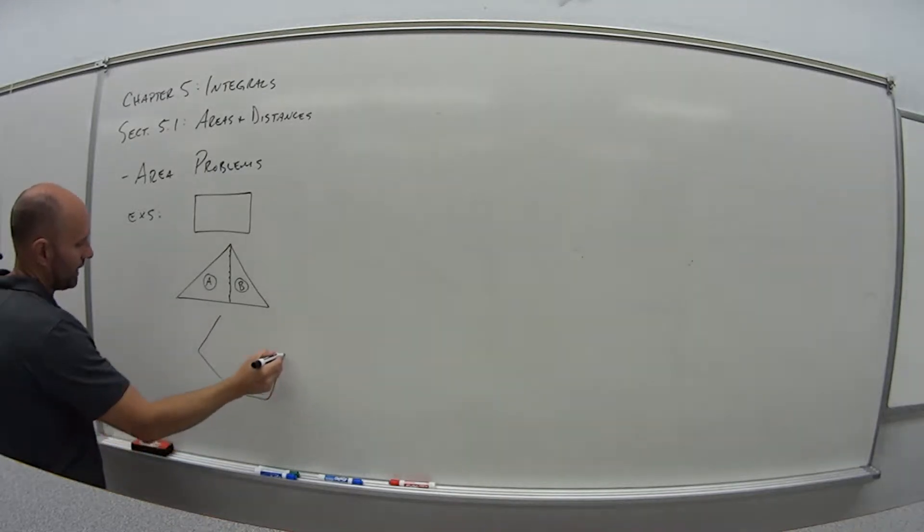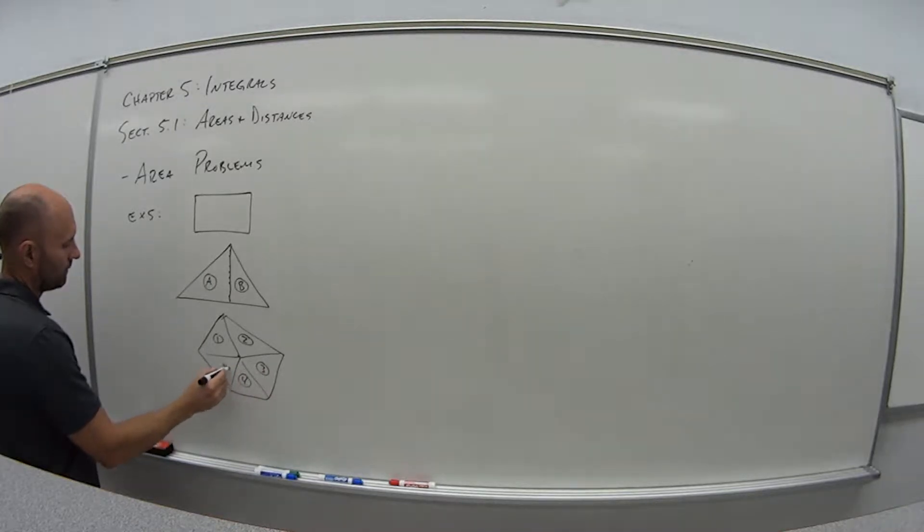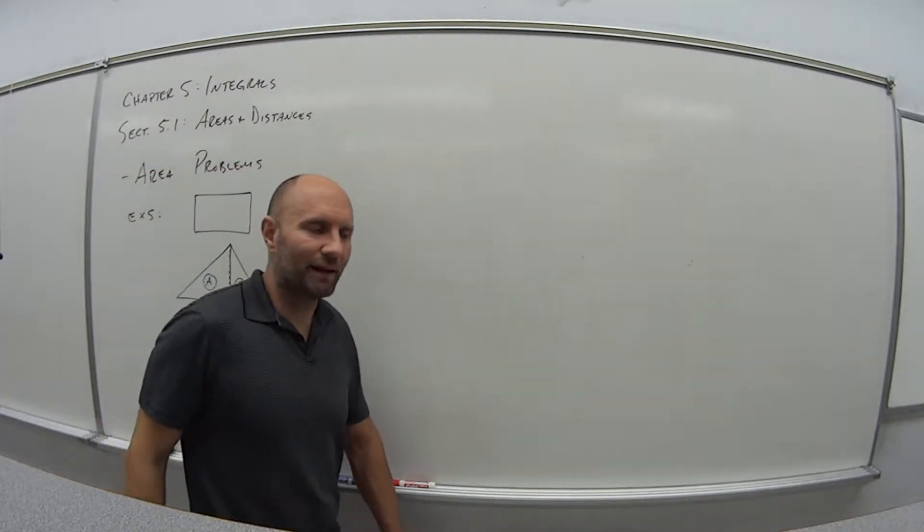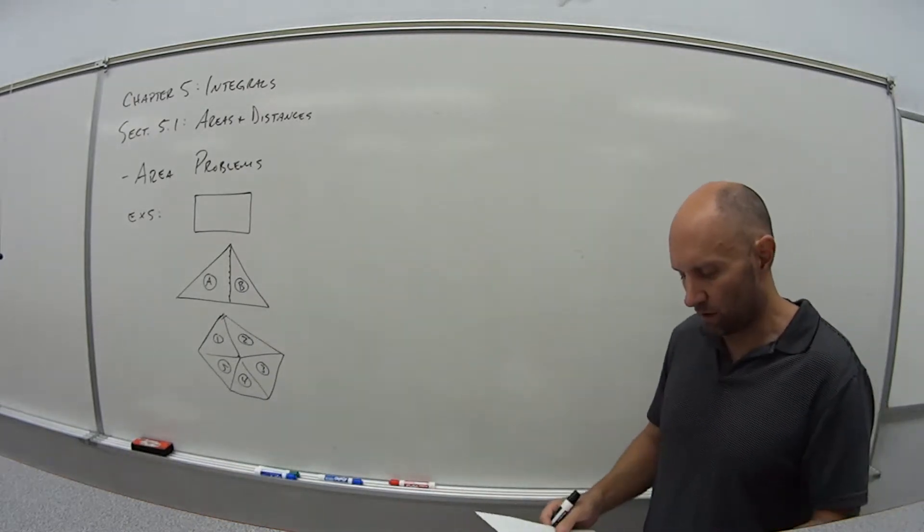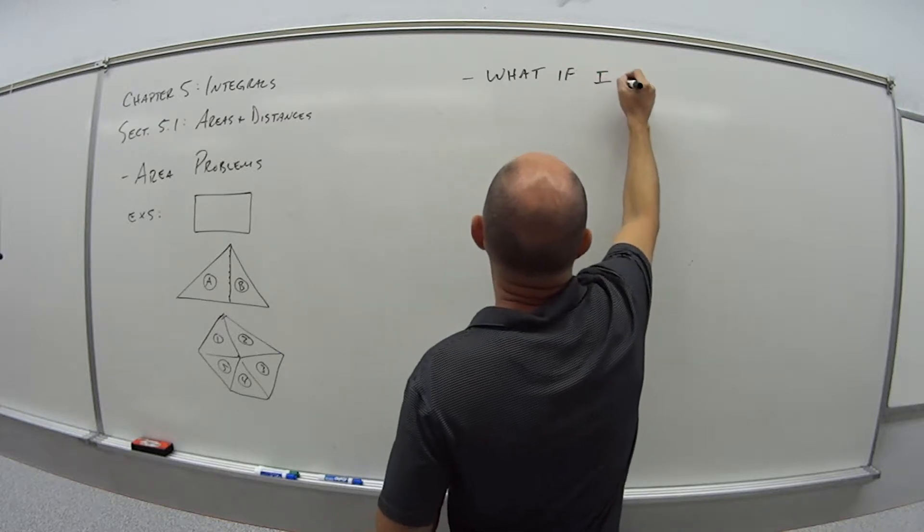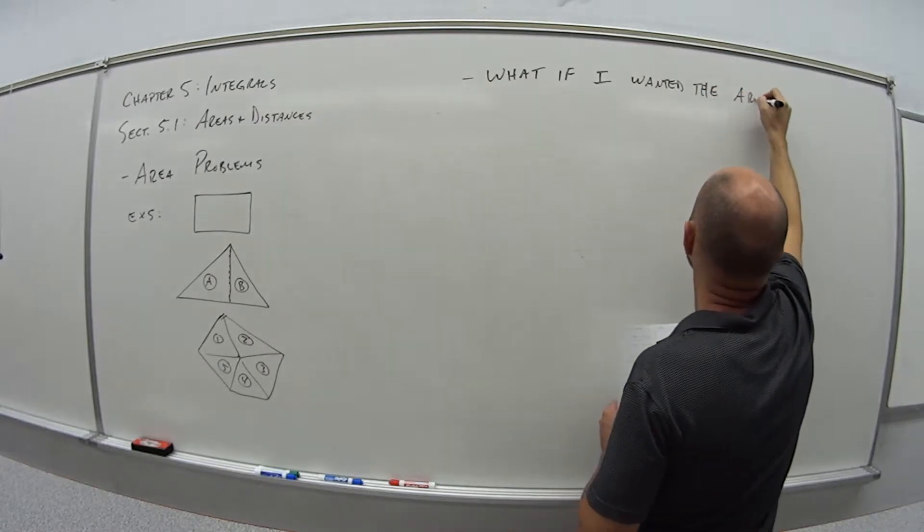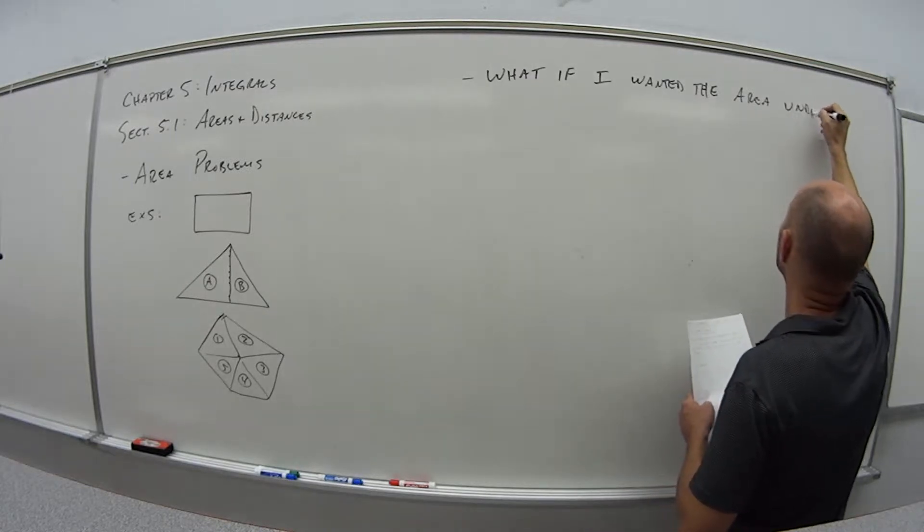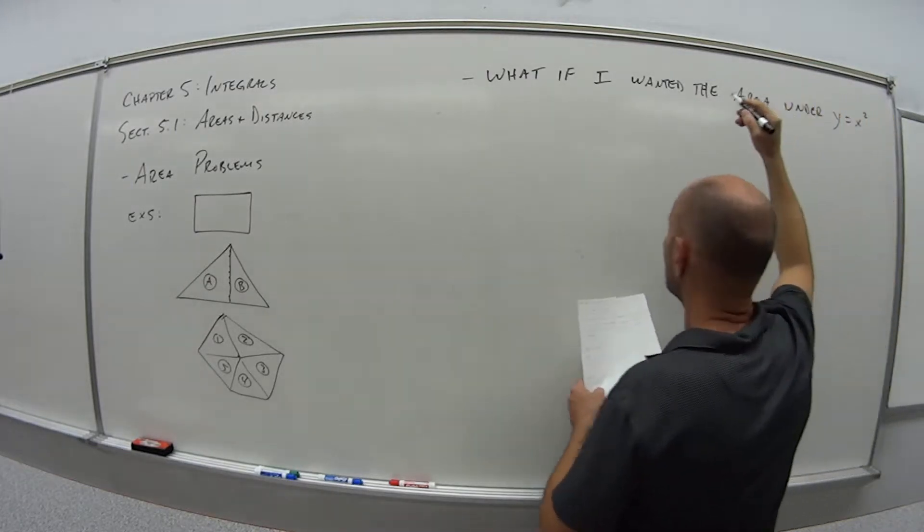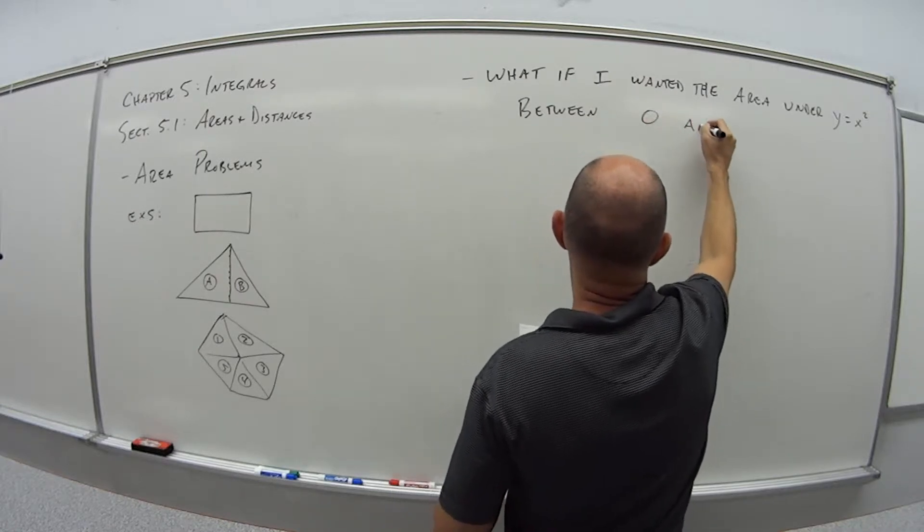Or maybe I have a pentagon. Not so regular, but. And what can I do here? Well, same thing. I could divide this into a bunch of triangles, five different pieces. If I didn't have the formula for a pentagon, I could figure out the area of all these triangles, add them all up, and that would give me the area. But, what if I wanted the area under the curve Y equals X squared between 0 and 1?